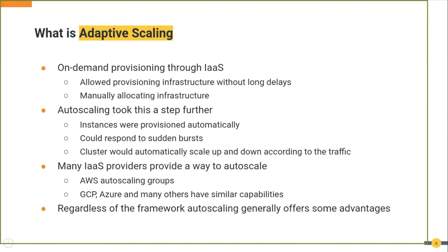The arrival of IaaS changed this a lot because it allowed provisioning infrastructure quickly without long delays. IaaS providers had large pools of computing resources interconnected and ready to use, so on a single button click they could provide the exact infrastructure someone needed. This changed the mindset from provisioning infrastructure beforehand to provisioning on demand, and also allowed application developers to focus more on feature development and worry less about provisioning.